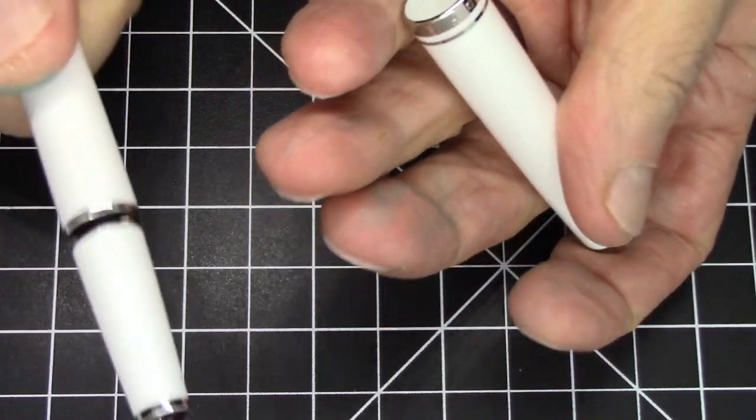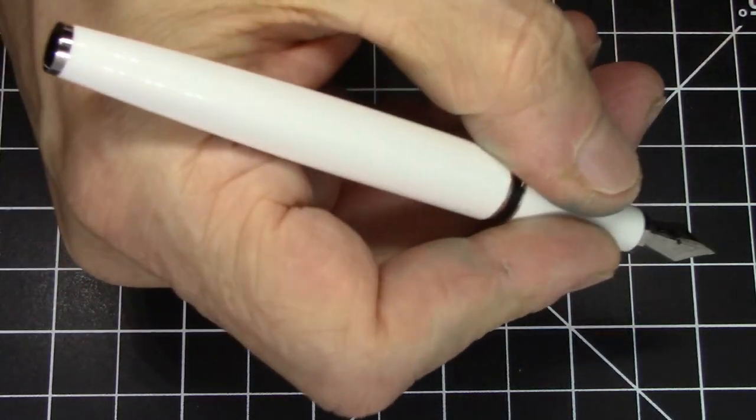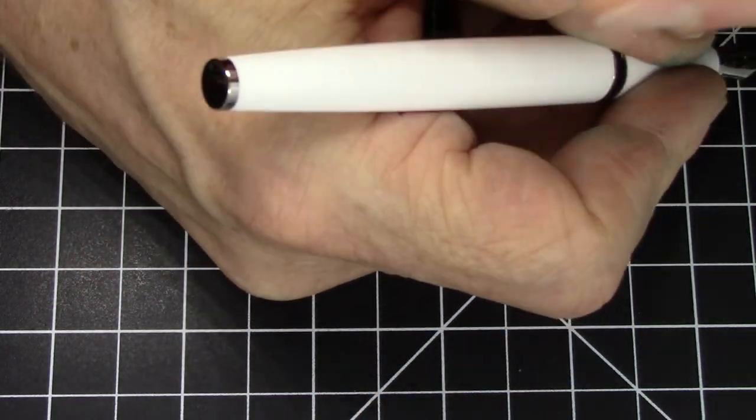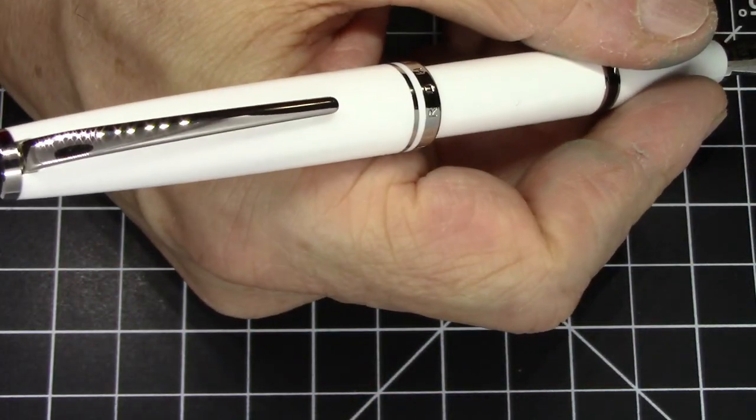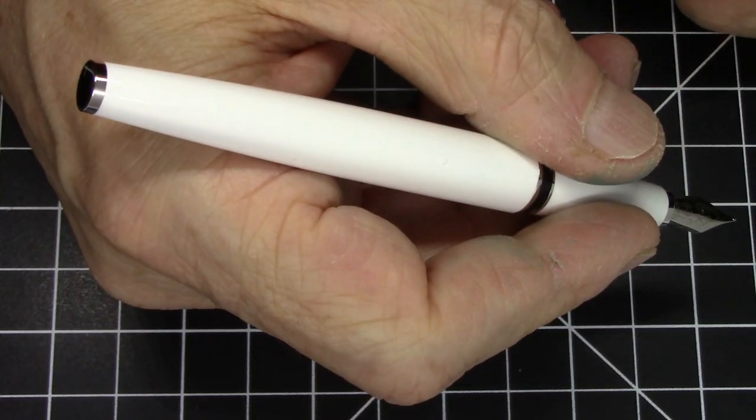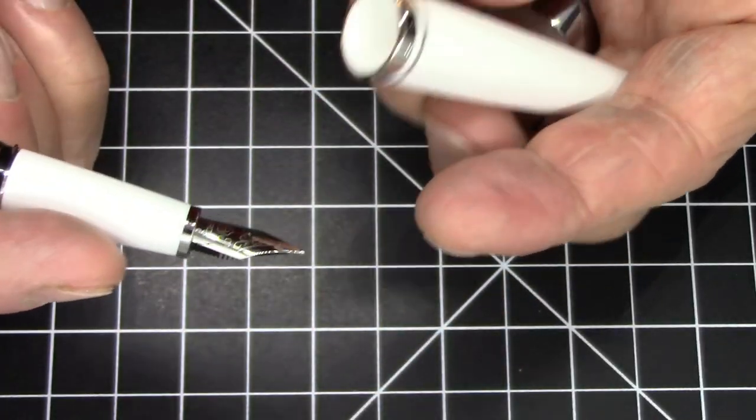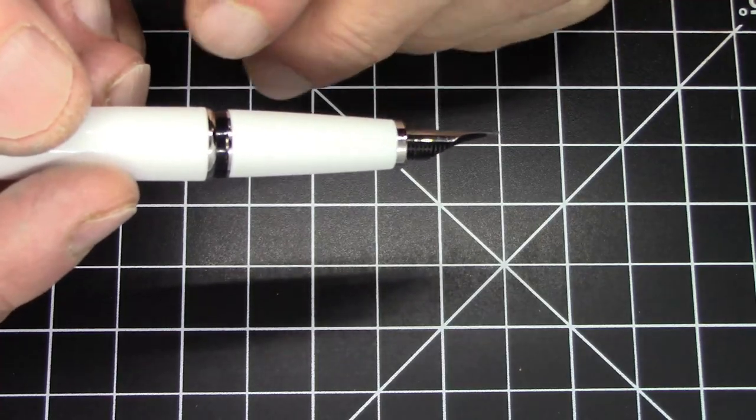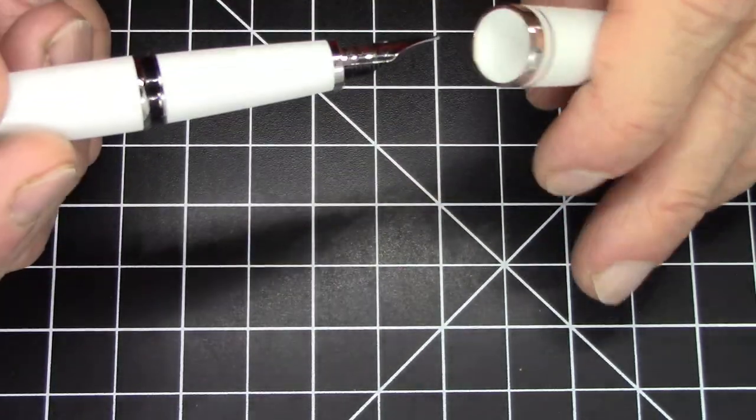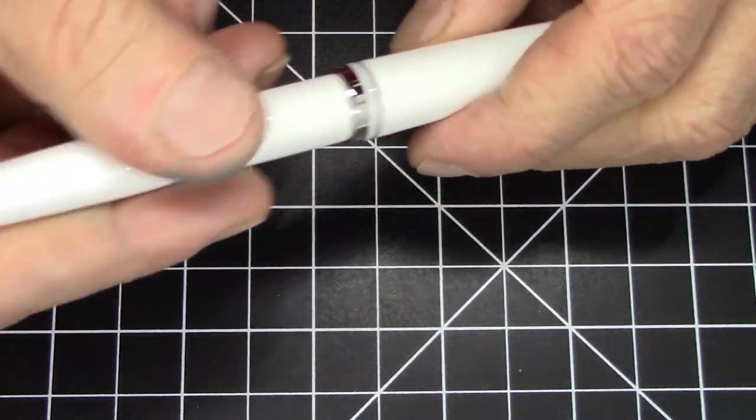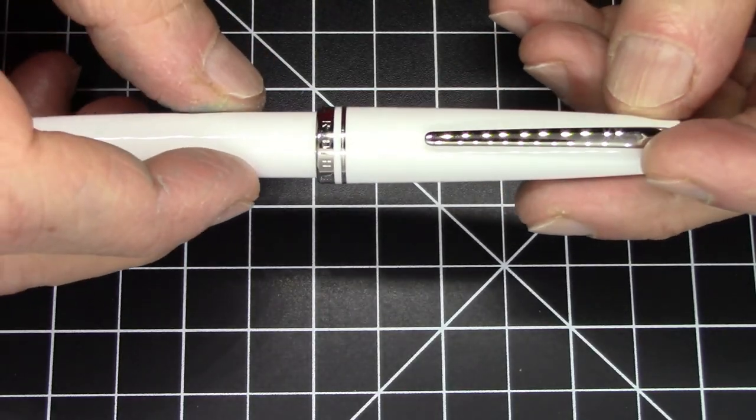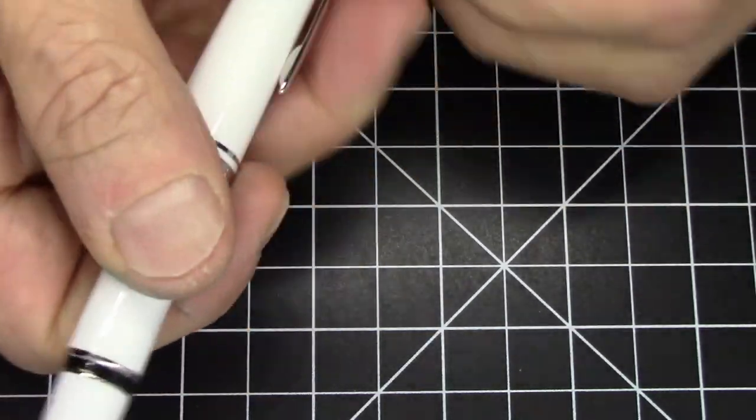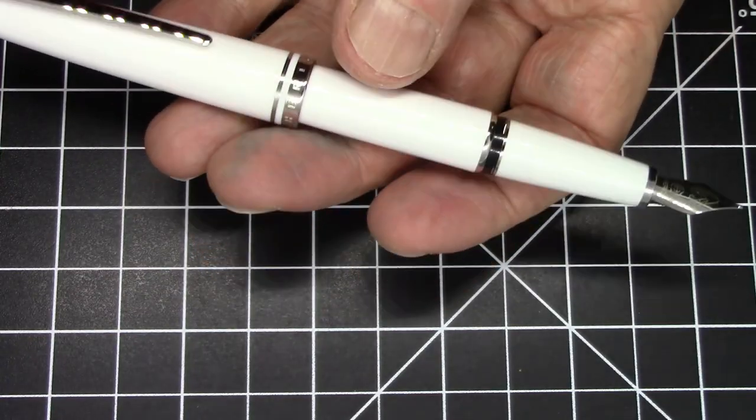But all in all, a pretty nice pen. I think it's a bit short to not post, plus it's pretty light, so it does post quite well. It actually does have an extra cap liner inside, even though it's a push pull, and it seals pretty nicely there.